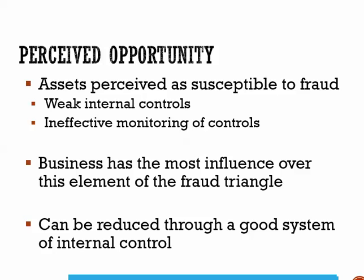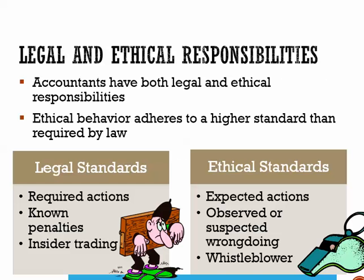The most effective way for a business to prevent fraud is to reduce or eliminate the perceived opportunity for an employee to misappropriate company assets or for a manager to falsify financial information. We'll talk about internal controls in just a minute. Accountants have both a legal and an ethical responsibility — ethical behavior is conduct that requires adherence to higher standards than required by law alone. This is extremely important in accounting because if people are relying on financial statements that are inaccurate due to fraud, those statements are not worth anything.